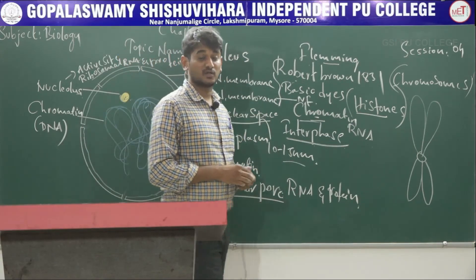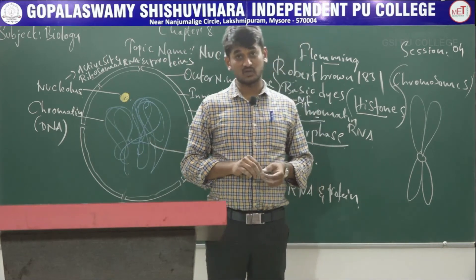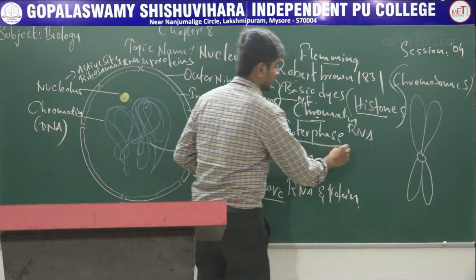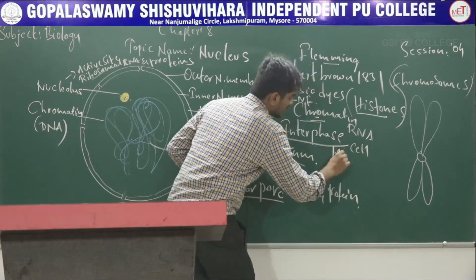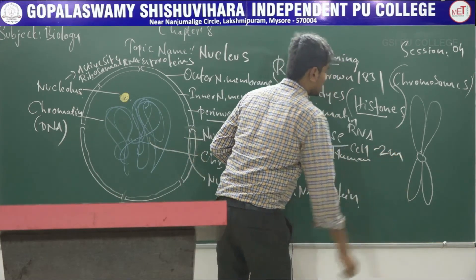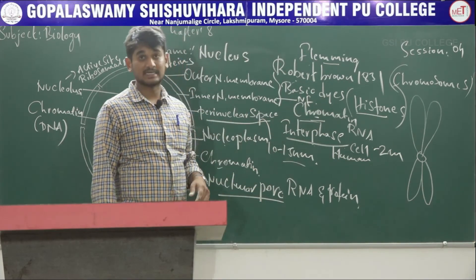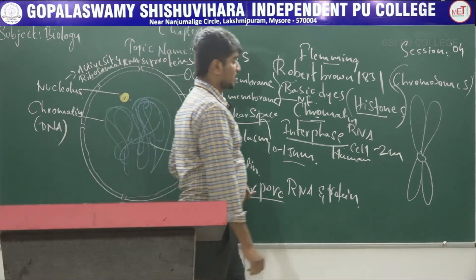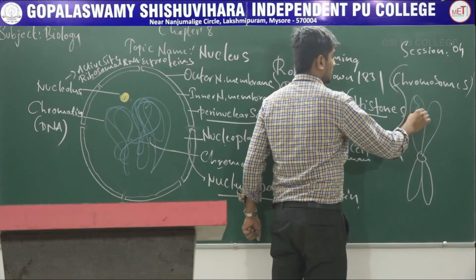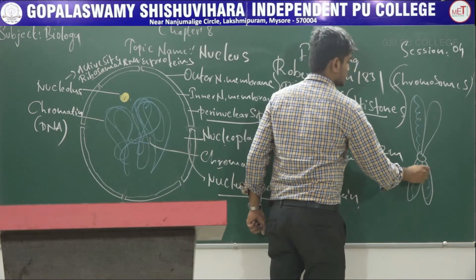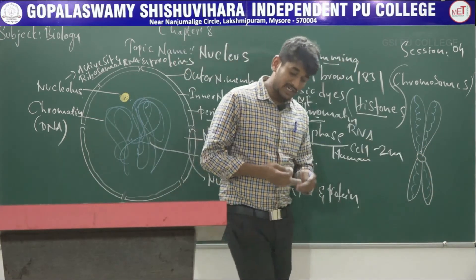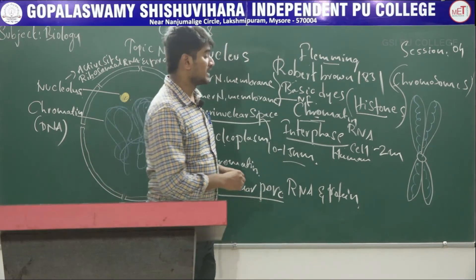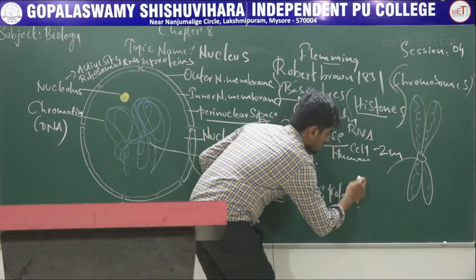The chromosomes maintain both genotype and phenotype characteristics. During cell division, the chromatin thread condenses to form chromosomes visible during cell division. Each chromosome has a primary constriction called the centromere. The centromere is covered by a disc-shaped protein structure called the kinetochore. Based on the position of the centromere, chromosomes are divided into four types: metacentric, submetacentric, acrocentric, and telocentric.